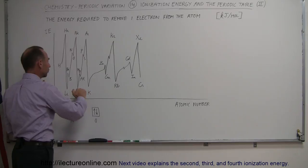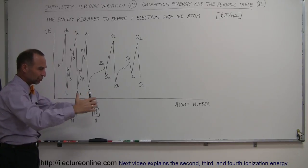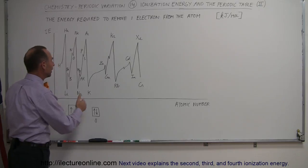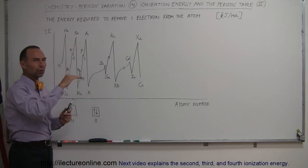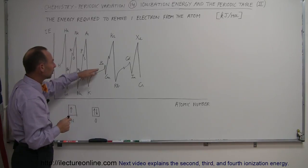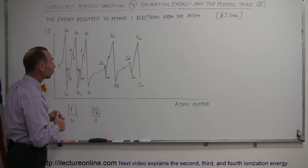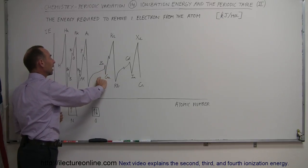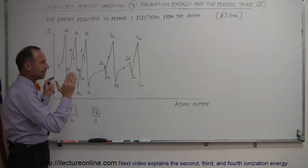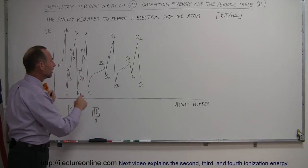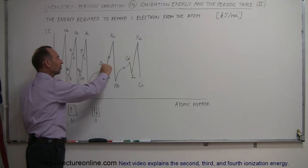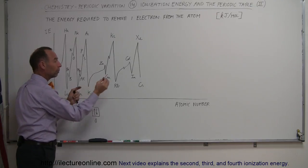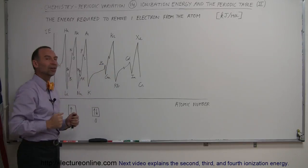Then we go to the fourth period, starting with potassium. There are now three energy levels of electrons shielding the last electron, so the ionization energy drops dramatically and then continues to go up. In the fourth period we encounter the D-orbitals for the first time — these belong to the transition metals. By the time we get to zinc, the tenth element of those D-orbitals, all the D-orbitals are completely filled. Then we go to gallium, where the first P-orbital has a single electron all by itself, and we can see the ionization energy drops again.